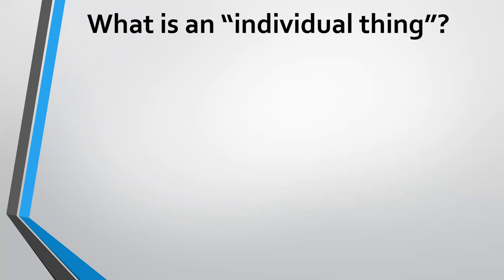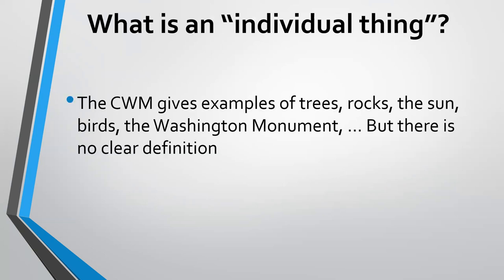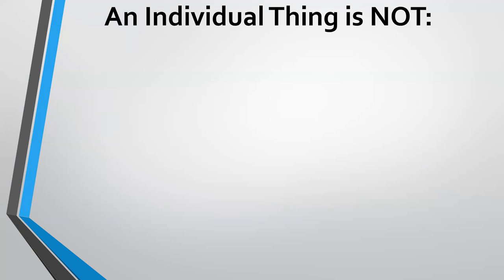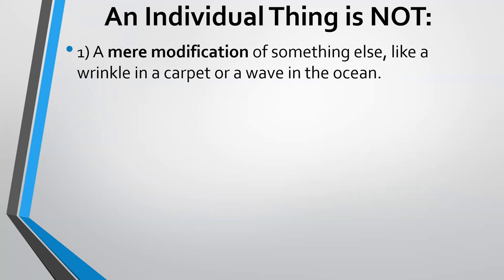Let's address the question of individuality by asking: what is an individual thing? The common Western metaphysics gives us examples — trees, rocks, the sun, birds, the Washington Monument — but doesn't really provide a definition. To get a grip on what an individual thing is, we might start with negatives. The common Western metaphysic says an individual thing is not a mere modification of something else, like a wrinkle in a carpet or a wave in the ocean. In part two we'll explore that idea, but the common Western metaphysics denies it.